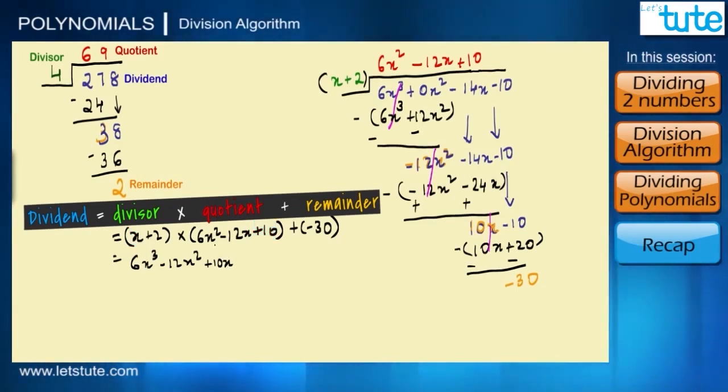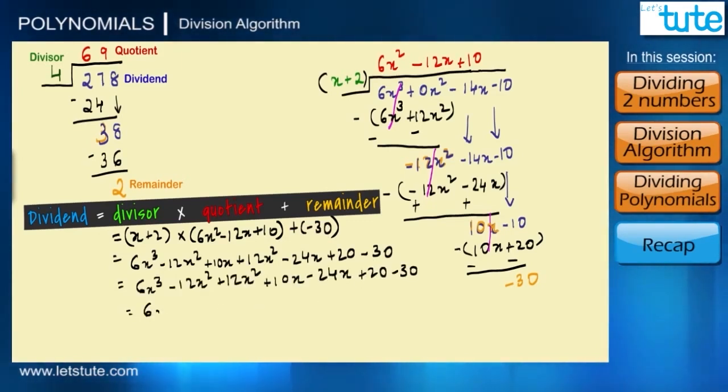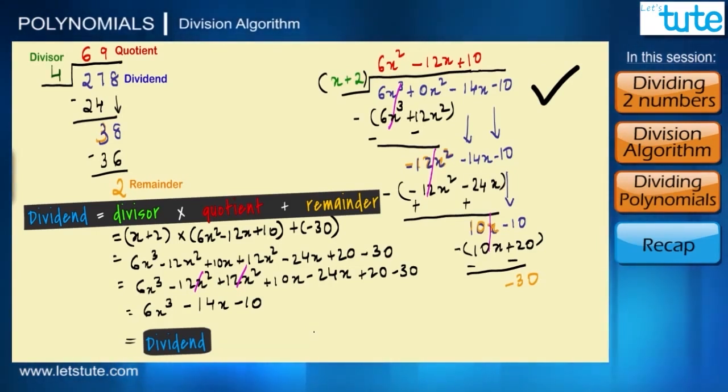Then let's go with 2. 2 into 6x² will give us 12x², 2 into -12x is -24x, and 2 × 10 is 20. And after opening the bracket we get -30. Then let's write the terms according to the degree. So now we have 6x³ here, negative and positive 12x² gets cancelled, then we have -14x - 10 which is our dividend. So this means our division is correct and we have used the algorithm to prove it.